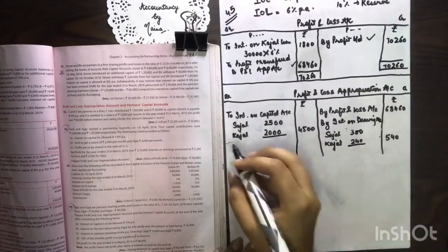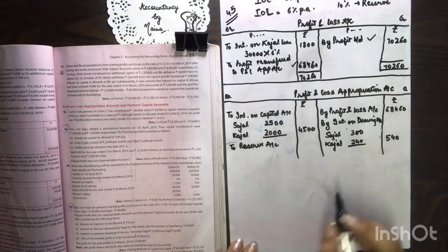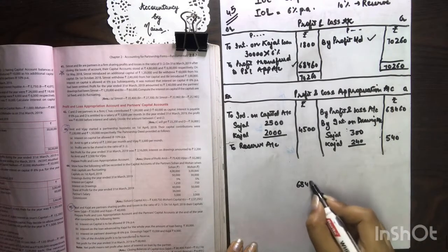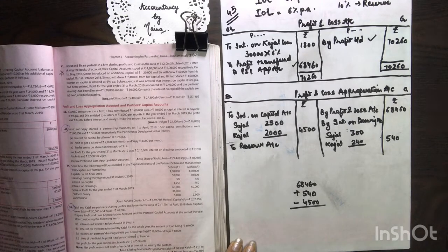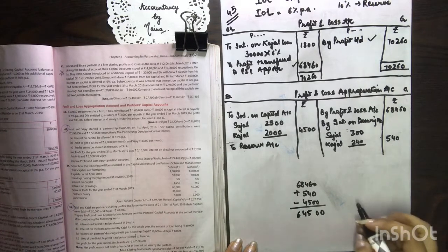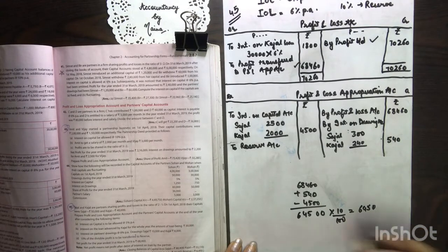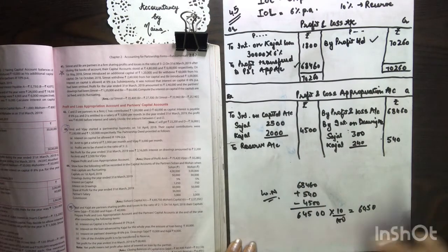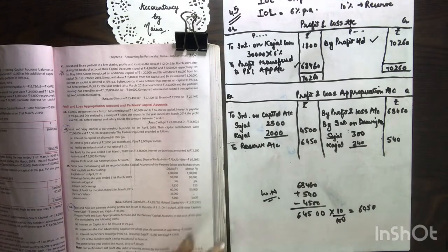After this, we have to transfer an amount to reserve. By reserve account — how much do we transfer? 10%. The calculation is: 68,460 plus 540 minus 4,500 = 64,500. So we need to transfer 10% of 64,500, which is our net distributable figure, to reserves. This amount came to be 6,450. Write this in your working notes.